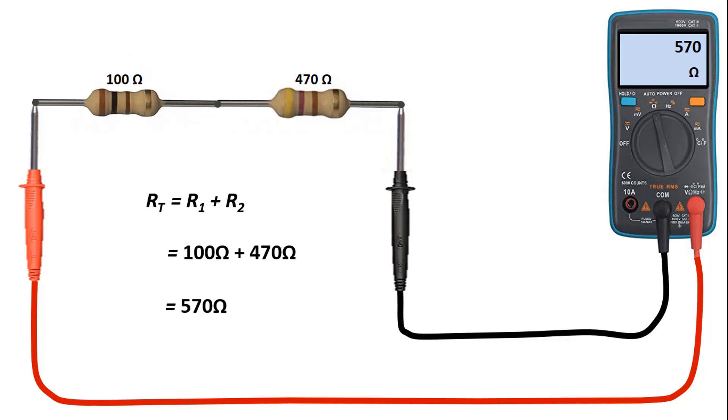For example, as you can see here, if we connect two resistors of 100 ohm and 470 ohm in series and if we measure the total resistance with the help of a multimeter, we can get the total value of 570 ohm.